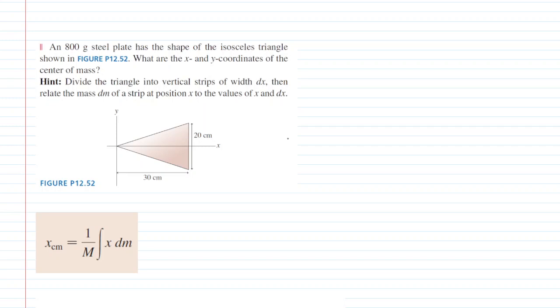In this question we're asked to find the x and y coordinates of the center of mass of this triangle shaped steel plate. We can actually say that the y coordinate of the center of mass is going to equal zero, and that is simply based on the symmetry of this shape. We can see that the shape has an even distribution of mass above the x-axis and below the x-axis, and so the coordinate of the center of mass on the y-axis must be zero.